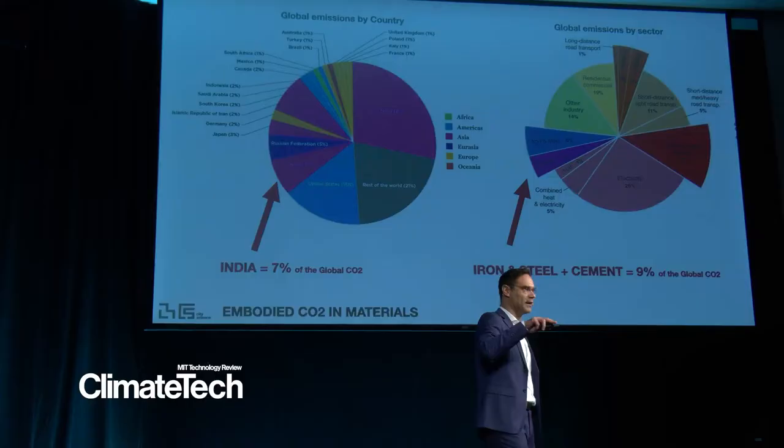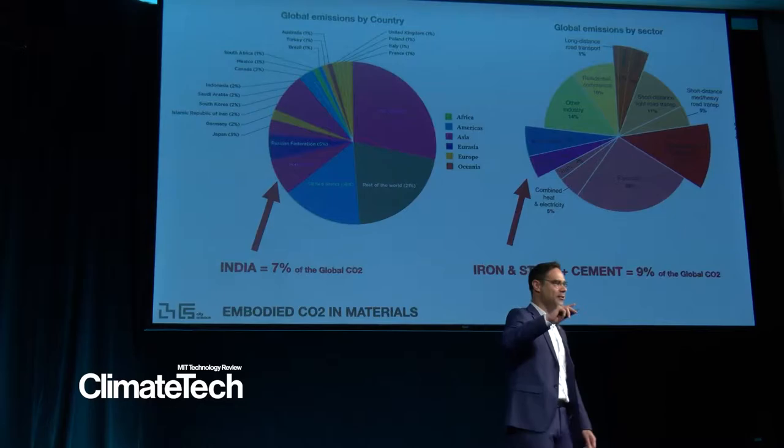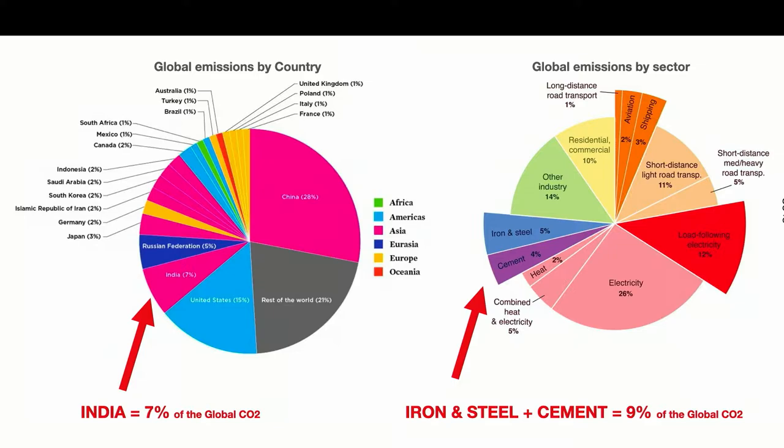Just to give a little bit of context, if we look into construction materials, we will see that the sector of steel, iron and cement produce 9% of the global CO2 of the planet. That's quite a lot. A country like India produced 7% of the global CO2, meaning 1.38 billion people produce less CO2 than the sector of steel, iron and cement. That's food for thoughts.